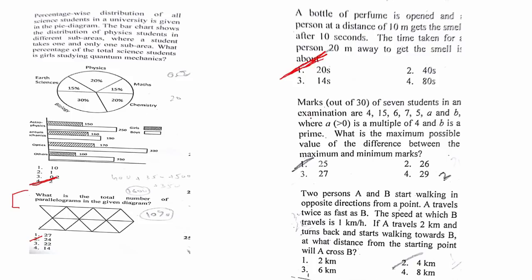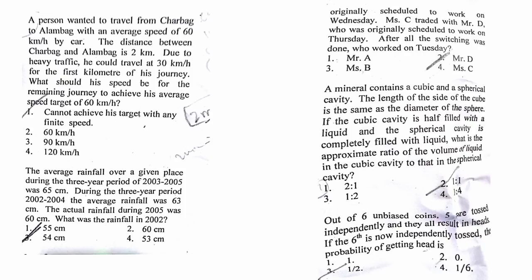Marks out of 30 of 7 students in an examination are given, so the maximum difference between minimum and maximum marks is 25. Two persons A and B start walking—for this the answer is 4 kilometers. A person wanted to travel from Charbagh—the answer is cannot achieve his target with any infinite speed.